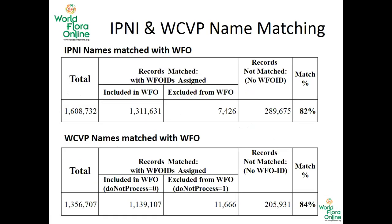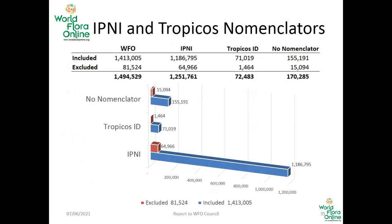Here are the results of name matching. We have 82% name matching between WFO and IPNI names, and 84% between WCVP names and WFO. In reality, our IPNI coverage went from 65% to 83%, and the nomenclator coverage is currently 89% if we count Tropicos ID as the nomenclator for bryophytes.